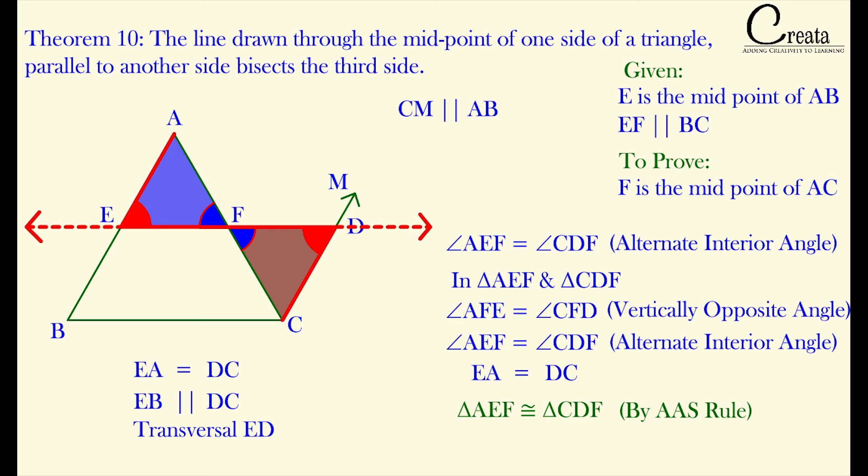So by AAS rule, we can say triangle AEF is congruent to triangle CDF. And by CPCT, we can say the corresponding sides are equal. That is, AF is equal to CF.